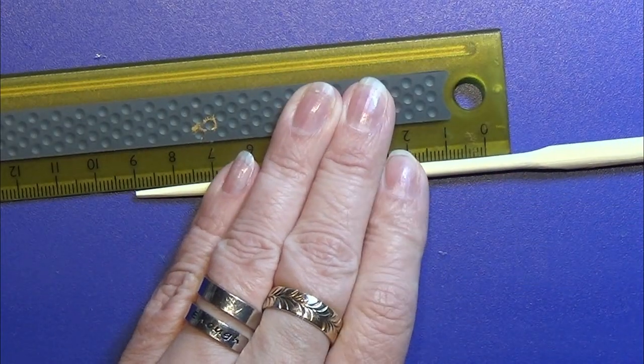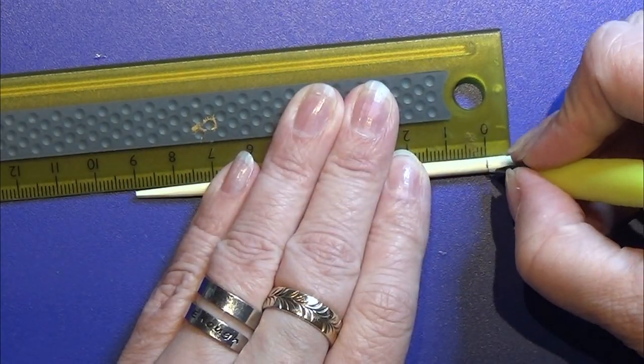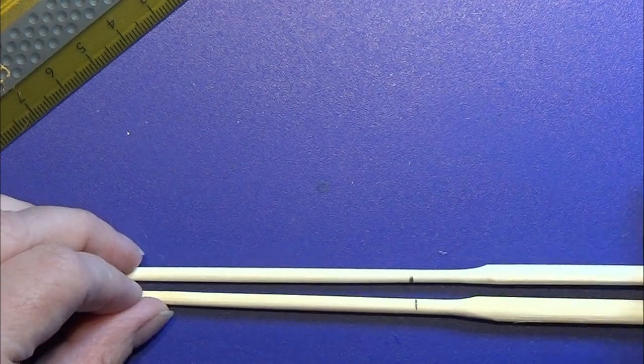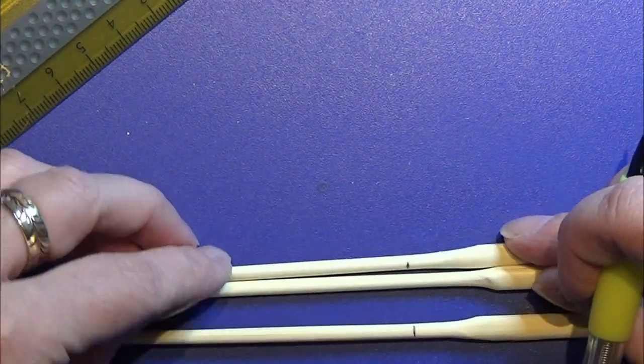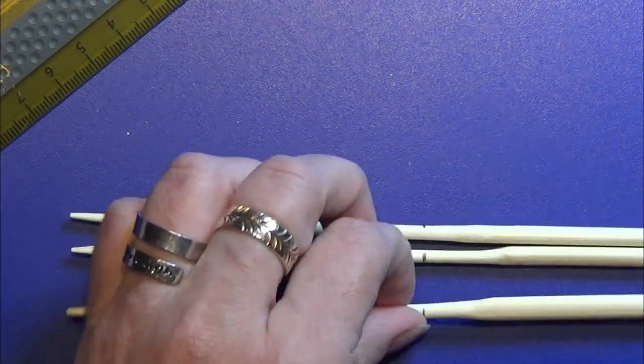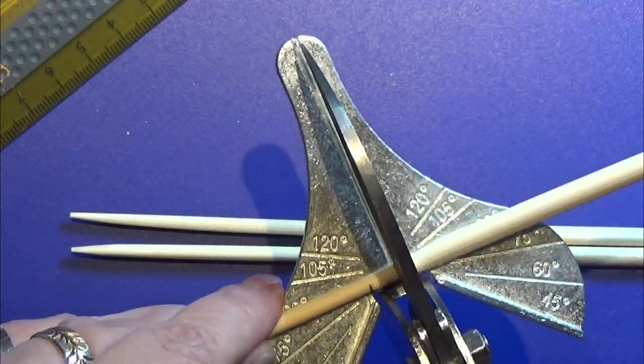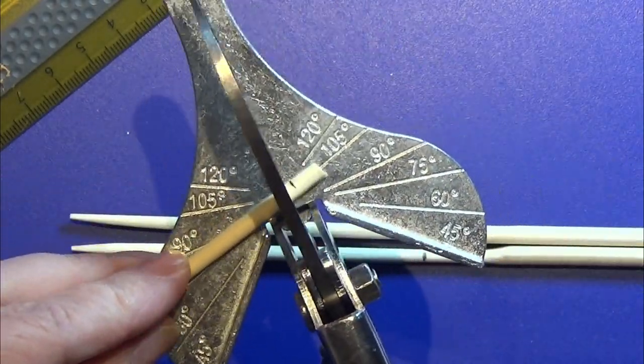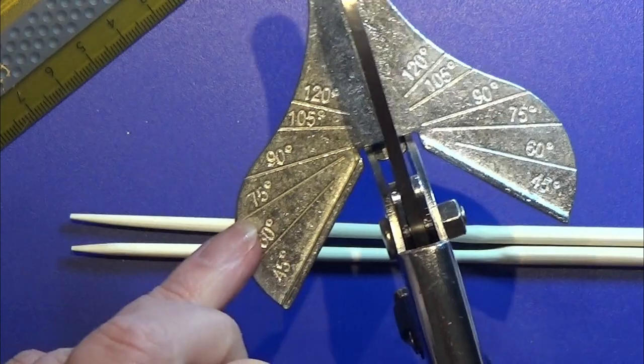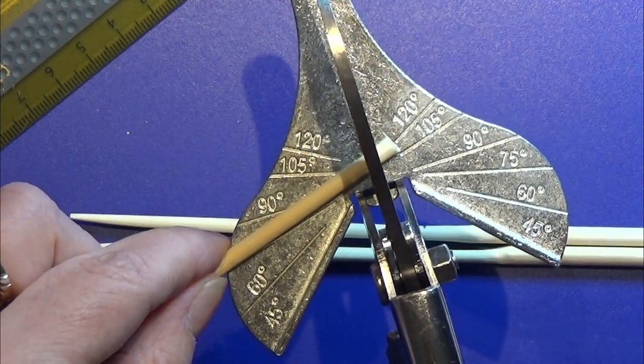So I have three chopsticks that I sanded nice and small, and now I'm just going to mark the nine centimeter lengths so I know where to cut with my easy cutter. I first made sure that my easy cutter would cut this material really nice and it did.